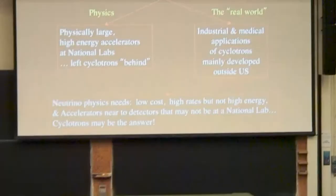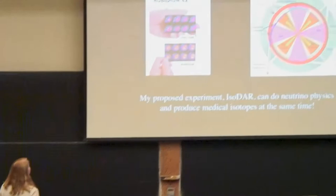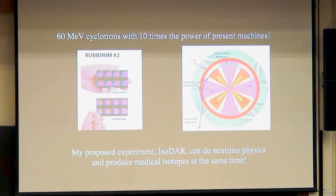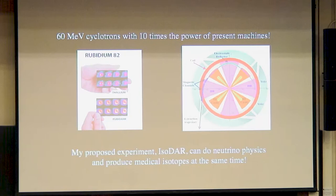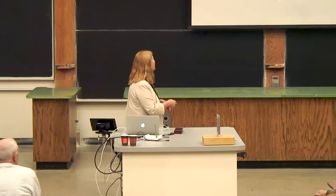Neutrino physics needs low-cost, high-rate, but not high-energy accelerators near to detectors, and cyclotrons could be the answer. My cyclotron design produces 10 times the power of present machines — an order of magnitude more power. These same machines produce very important radioactive isotopes for imaging and treatment, so this cyclotron design can really change lives by producing rare isotopes in much greater quantities. In fact, I would like to scrape off some beam as we are running, make isotopes with it, sell those isotopes, and we would become the first self-funded particle physics experiment in the world. Watch for IsoDAR — that's the name of the experiment.